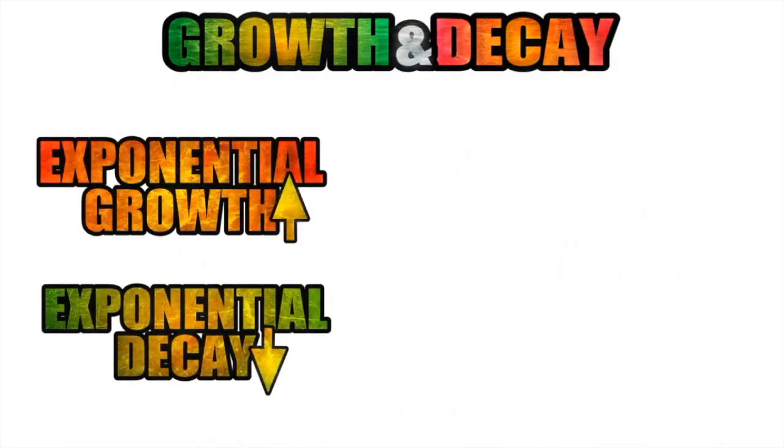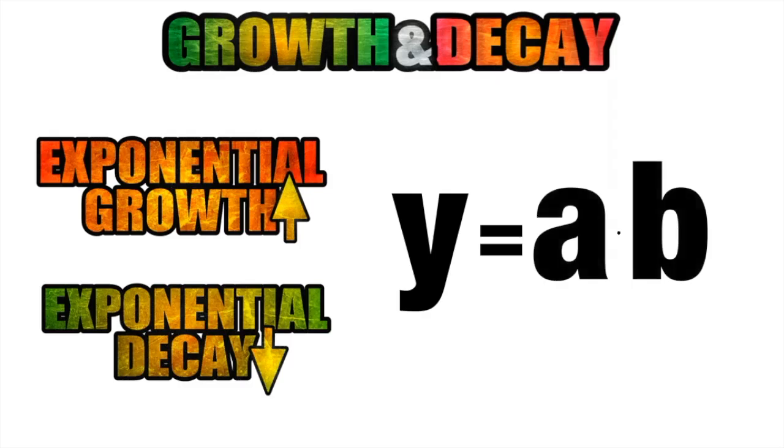So if we want to model growth or decay using an equation, we have to use one in the form y equals a times b raised to the x power. Notice here that our variable is an exponent, which is what makes an exponential equation unique.